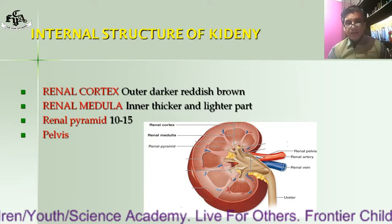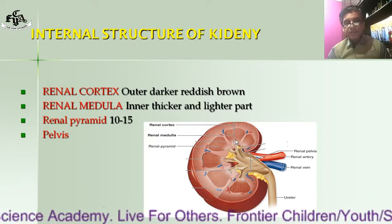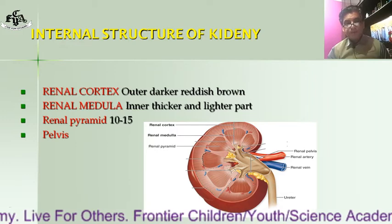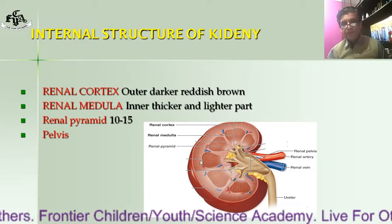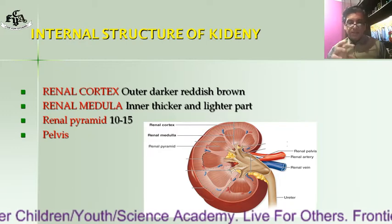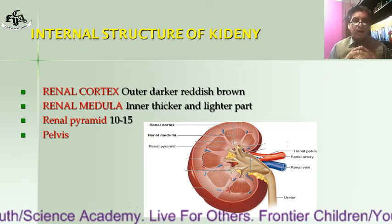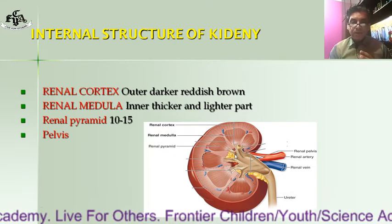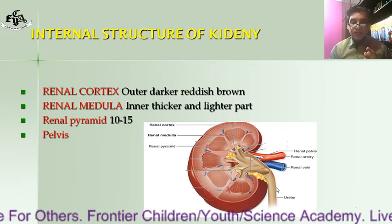The renal medulla is the inner portion — it is thicker and lighter in color. The renal pyramids are pyramid-like structures, 10 to 15 in number, visible inside. The pelvis is a slightly dilated portion of the kidney's internal structure, and the ureter — the tube — arises from this pelvis region.